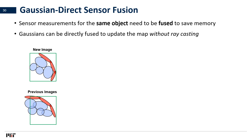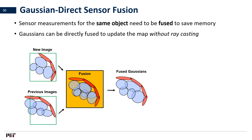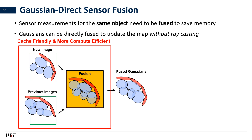Across different images, we can directly fuse Gaussians that represent the same object in 3D space without ray casting. Here, we illustrate a bird's eye view of the blue and red Gaussians created from the new image and previous images as 2D ellipses. Since the Gaussians in the green box represent the same region in the environment, they can be directly fused together. Since the subset of Gaussians that are fused together often requires less than 100 kilobytes to store, the fusion process is very cache-friendly and energy efficient due to temporal locality of the data. Since the number of Gaussians is much less than the number of rays, the fusion process is also computationally efficient.